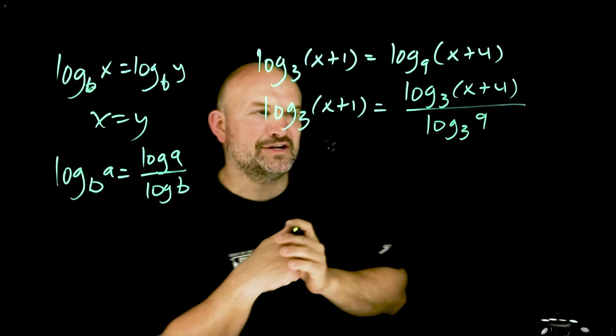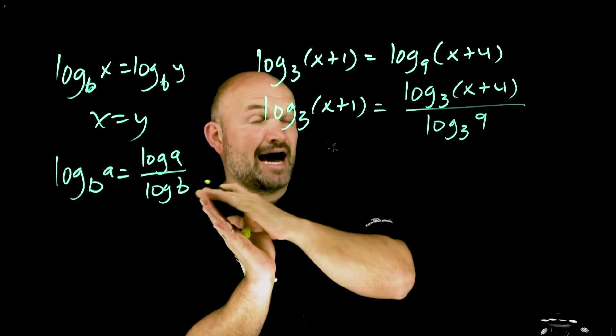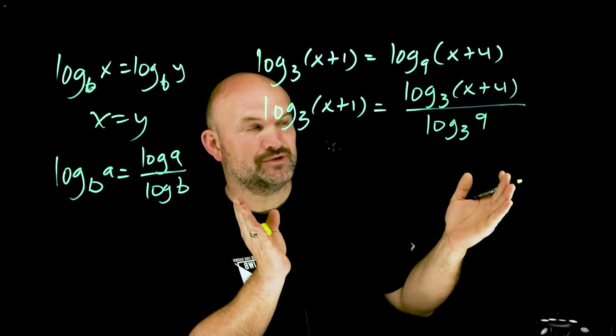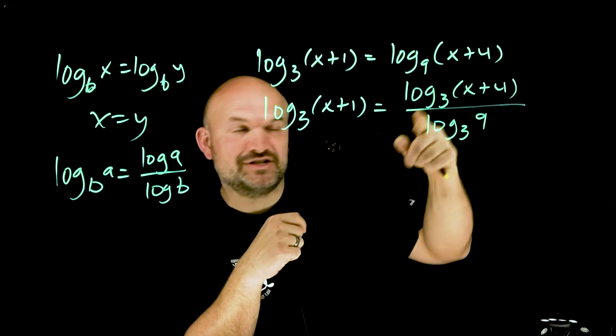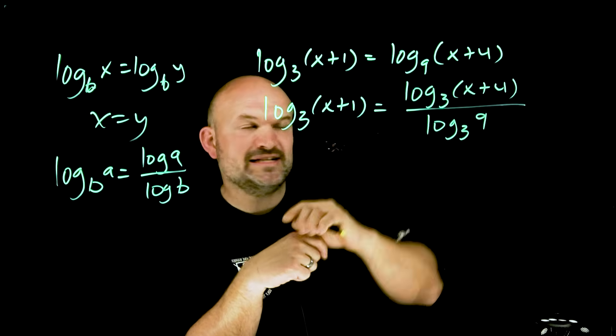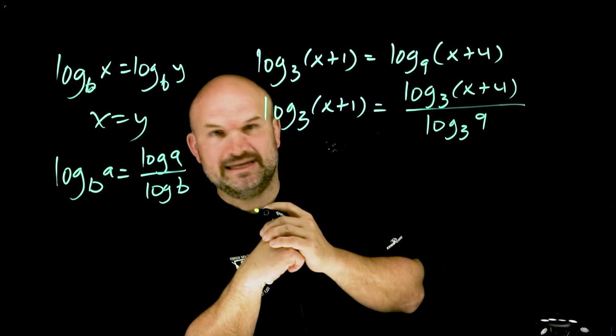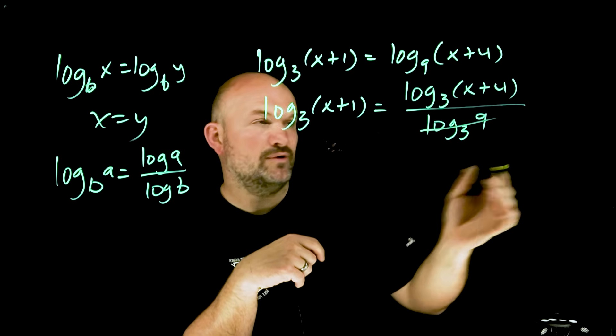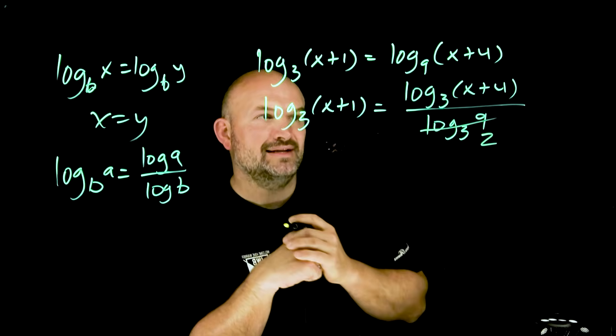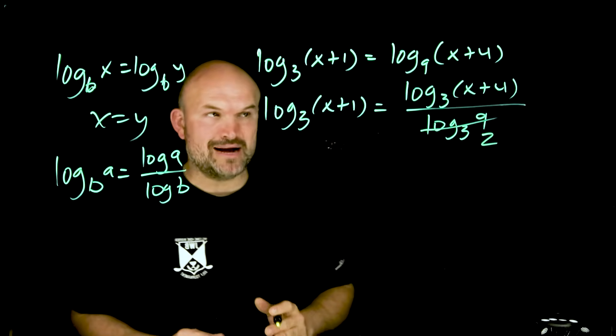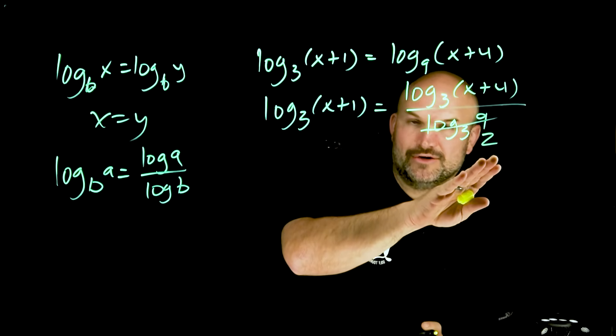Now a couple things that are helpful here. One is now I have all my logarithms in log base 3, and number two is I can actually evaluate this, right? The log base 3 of 9 is basically saying 3 raised to what number is going to equal 9. Well, hopefully we know that that number is going to be a 2. Now again, I still can't use the one-to-one property here because I have this logarithm being divided by 2.